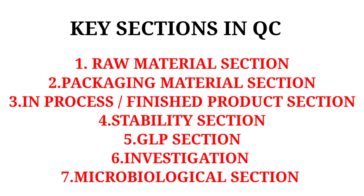The raw material section includes three components: sampling of raw materials once they arrive at the facility, testing of the raw materials, and release of the raw materials if they meet specifications. If they do not meet the specifications, they are sent back to the supplier.